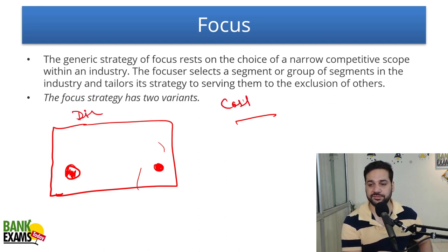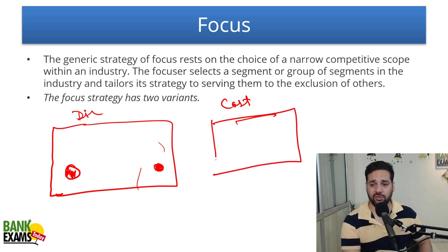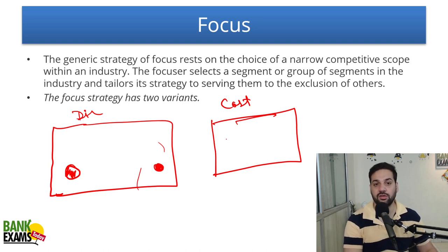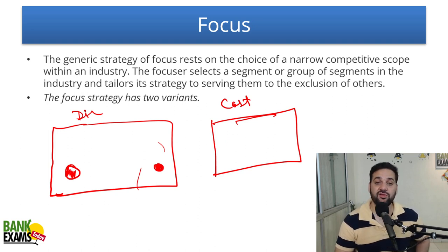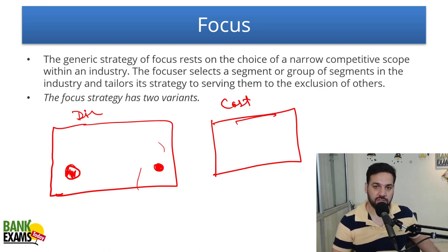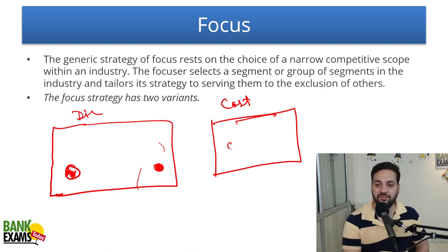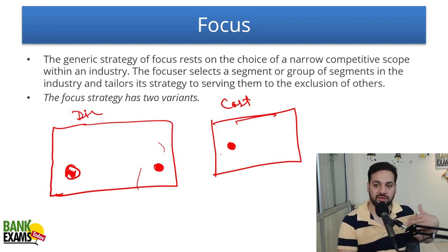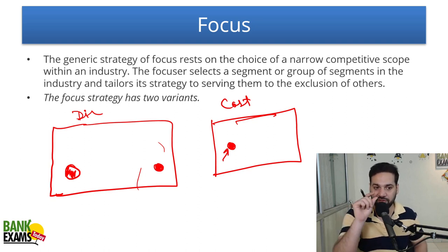For cost focus — in the whole hosiery industry there are different kinds of products. There are firms specializing in producing cotton cloth. Then there is an entity specializing in producing the best quality elastic at the lowest price. They are the market leader in that segment. Although the market is small — it is a small segment of the whole industry — they became the leaders.